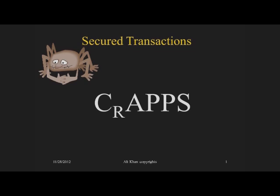The first two stages are absolutely essential. You must have a creation of security interest and the security interest must attach. If the security interest attaches, in most secured transactions the security interest is fully enforceable against the debtor. You need perfection to compete with other lenders or buyers. Priority matters only if there is competition. S matters only if there is default. If there is no default and no competition, you still need the first two stages.